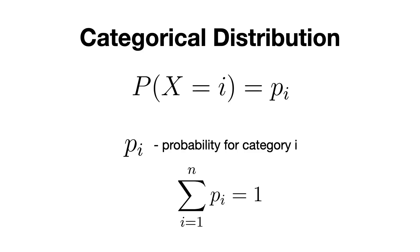So, to summarize, this distribution describes the probability of each individual outcome in a single trial with multiple possible results.